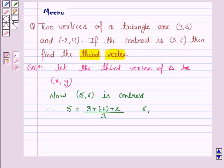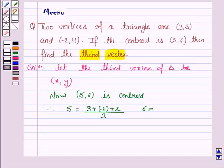equals the sum of the y-coordinates of the three vertices upon 3, that is 5 plus 4 plus y, since the third vertex has y-coordinate as y itself, upon 3.